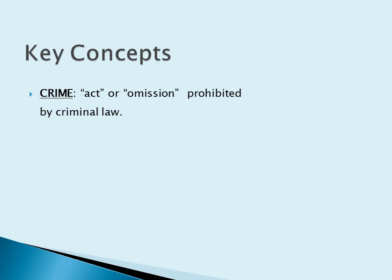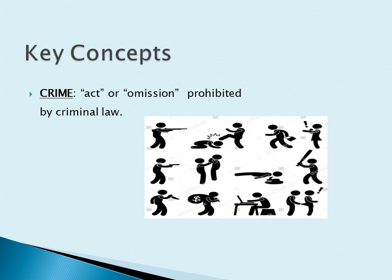For example, failing to give assistance to a person in peril, or failing to report a case of child abuse. The types of crime may include violent crimes, property crimes, sex crimes, white collar crimes, and crimes against the environment like poaching, etc. The law of the state punishes for the commission of crime through fines, imprisonment, or some other form of punishment.